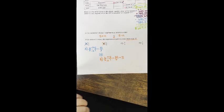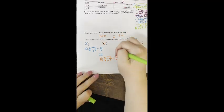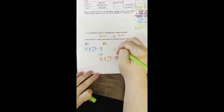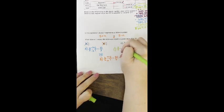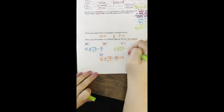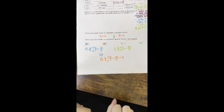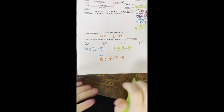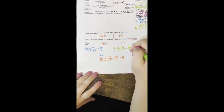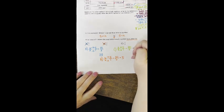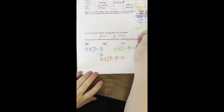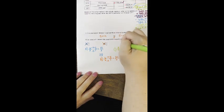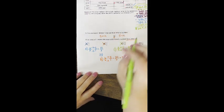Let's try answer choice C, which was 4 over 5. Again, I'm multiplying by the whole number 5 — whole goes over 1, top times top, bottom times bottom. It's improper, so we divide: 20 divided by 5 equals 4. 4 is not more than 5, so C is also wrong.